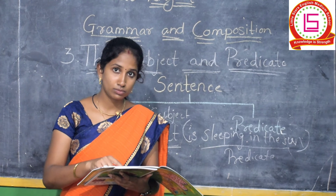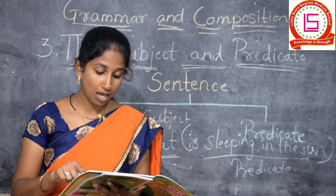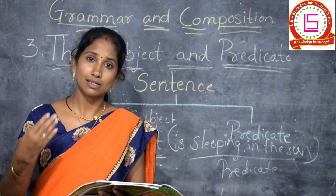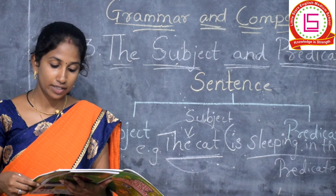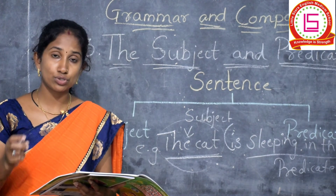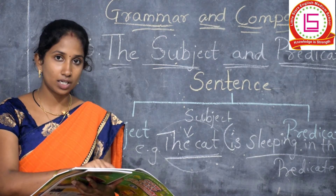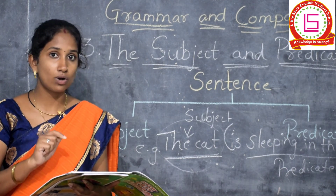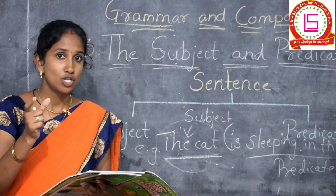The subject of a sentence names the person or thing we are speaking about. The subject usually is a noun group — subject usually is a noun. The question who or what before the verb gives us the subject of a sentence. We ask who or what before the action word. The porter carried our luggage — carried is our verb, so we ask: who carried our luggage? The porter. So the porter is the subject.